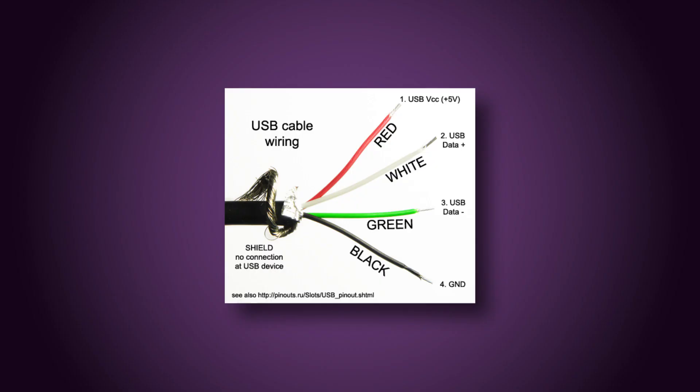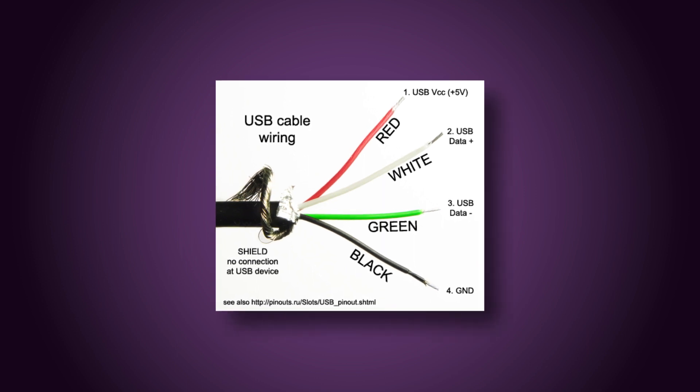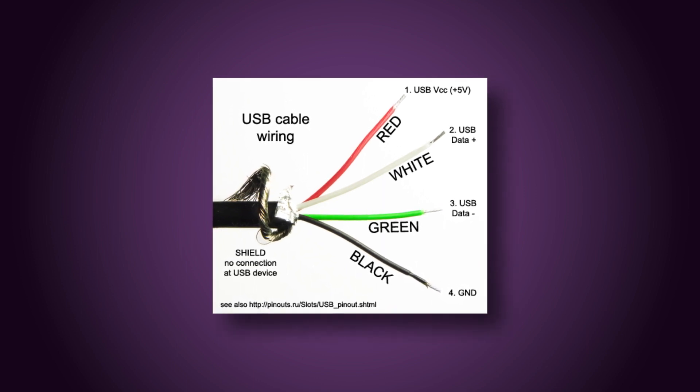There are two major ports: one is a charging port and one is a data transfer port. Once you charge using a USB condom, the data transfer port is blocked. If you charge with a USB condom, only the charging port is activated and the data transfer port is blocked.